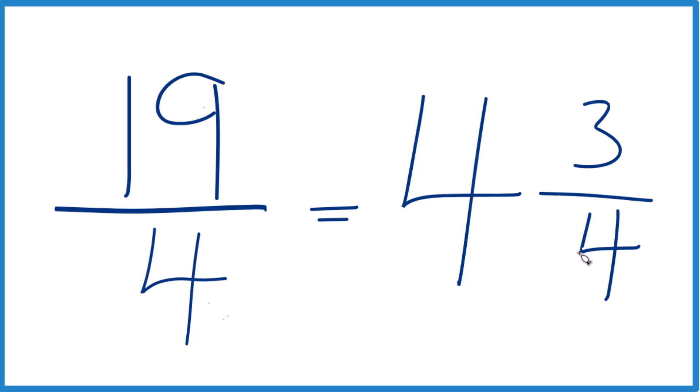We can check that too, because 4 times 4 is 16. 16 plus 3, that's your 19. Keep the 4 the same, and you're done.